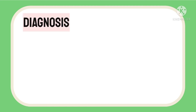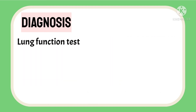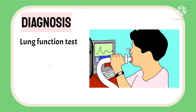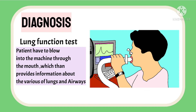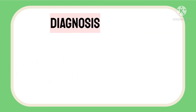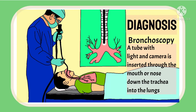The diagnosis of bronchiectasis is made by chest CT scan, X-ray, and blood and sputum tests. A lung function test requires the patient to blow into a machine through the mouth, which provides information about the various capacities of the lungs and airways. A bronchoscopy may also be performed, wherein a tube with a light and camera is inserted through the mouth or nose and down the trachea into the lungs, helping to visualize the airways directly.